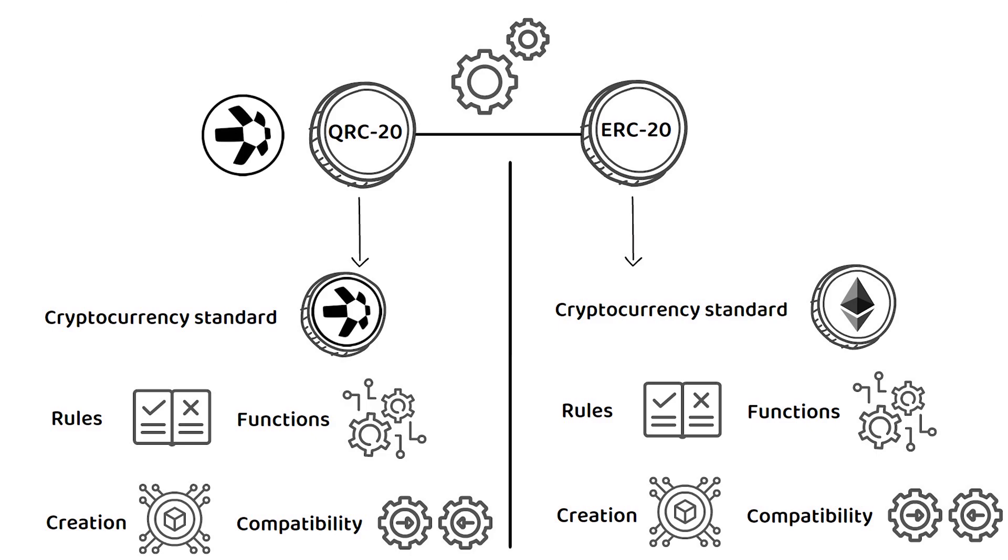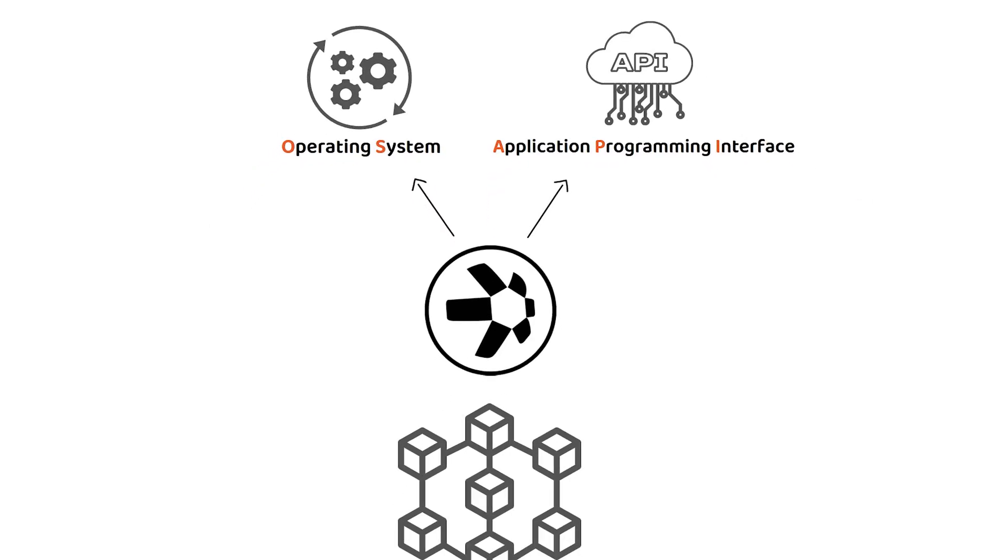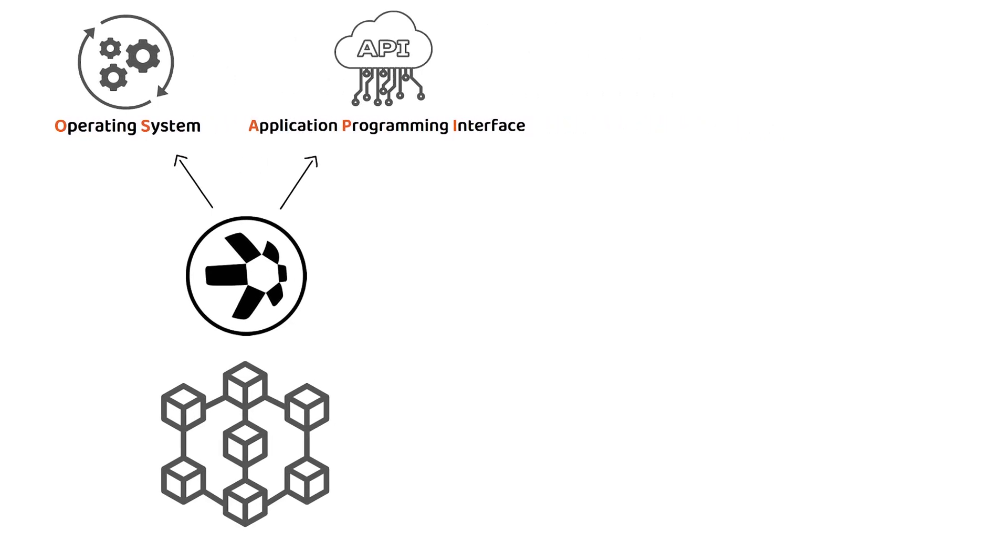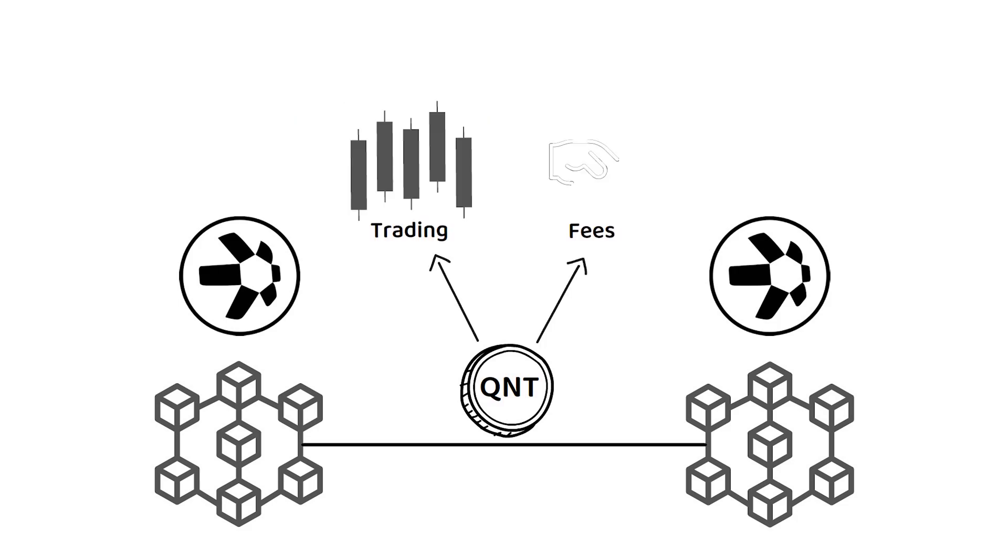Meaning that instead of being a layer 1 such as Ethereum or layer 2, Quant is neither. This is because Quant is the operating system or OS and the application programming interface or API that is built on top of any blockchain to make them compatible with each other using the QNT token as a measurement of value when trading and for paying the associated network fees.